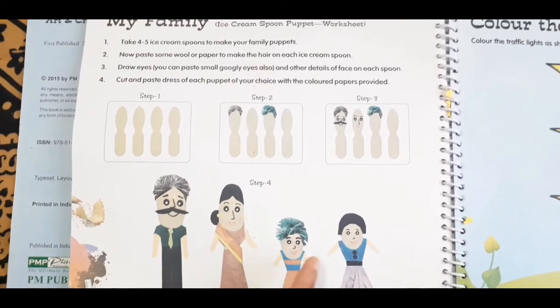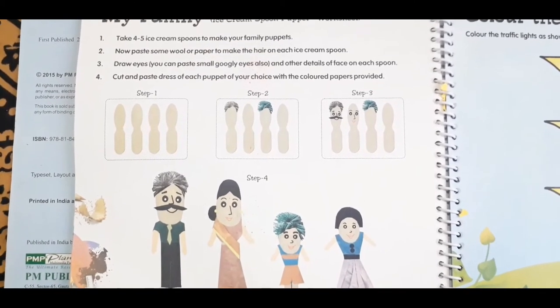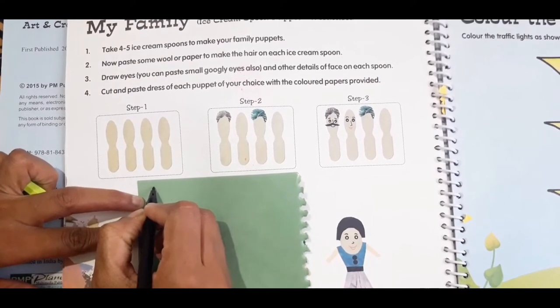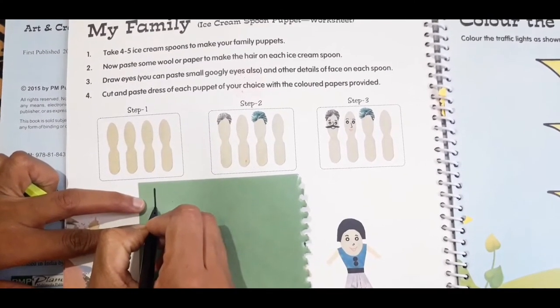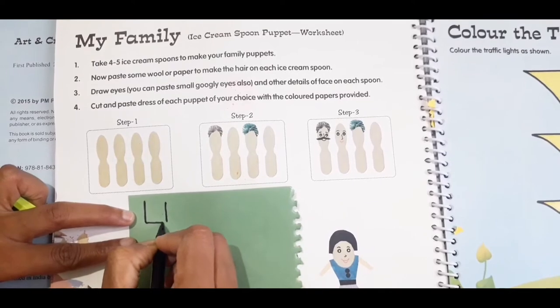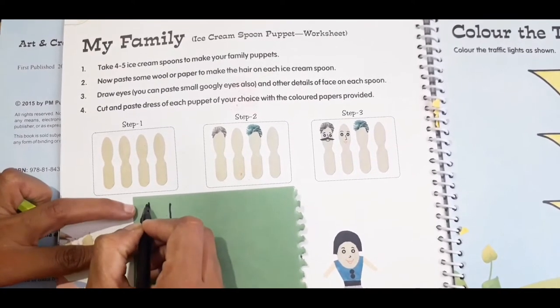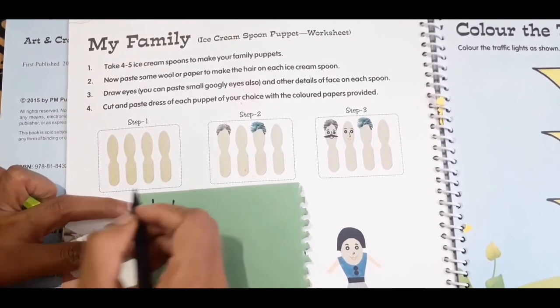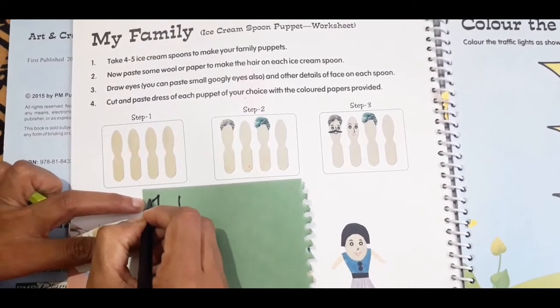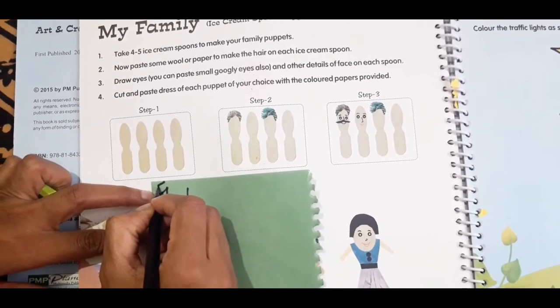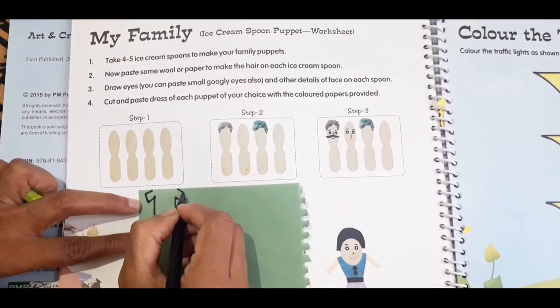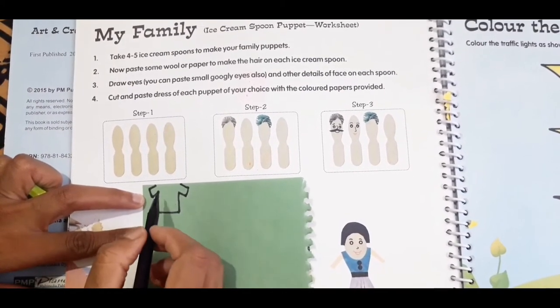So I will make papa puppet. You have to make a standing line, one more standing line, and a sleeping line. Then you have to make the hands also. Children, you have to make two slanting lines and then a line over here. I have made the shirt, it is so simple.